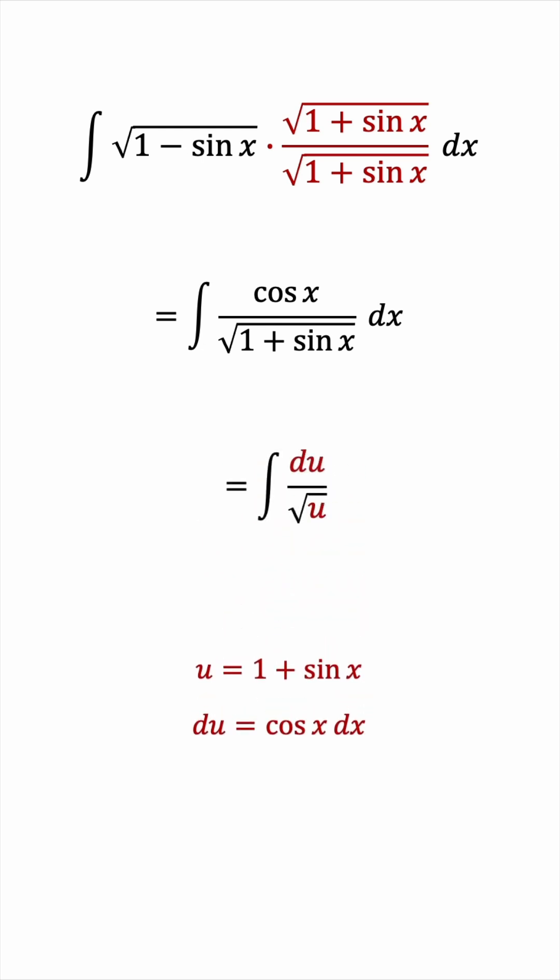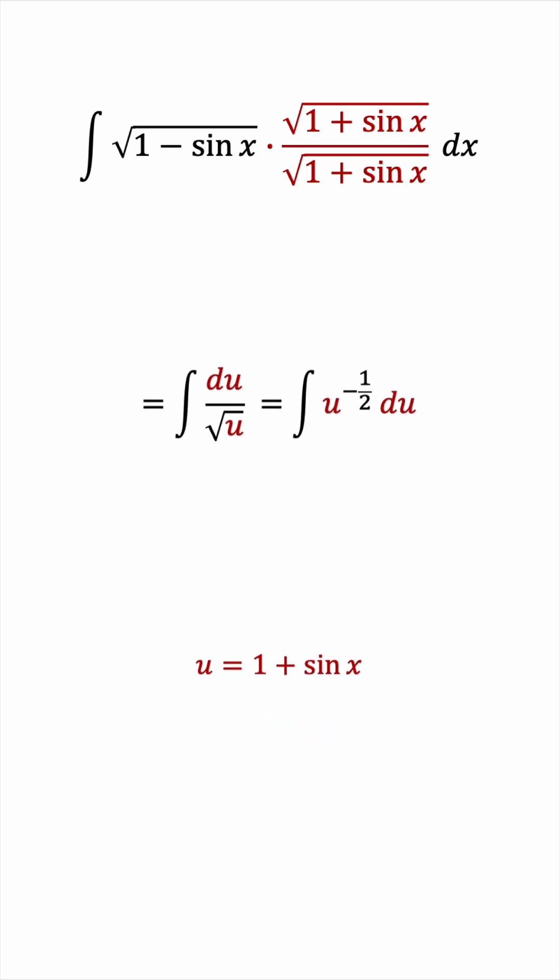Now the square root of u is u to the power of 1 half. And that's in the denominator. So this is u to the power of negative 1 half. And now to integrate this, we'll add 1 to the power and divide by the new power. Dividing by positive 1 half is like multiplying by 2.